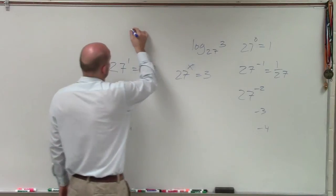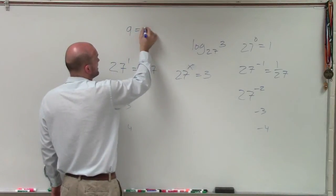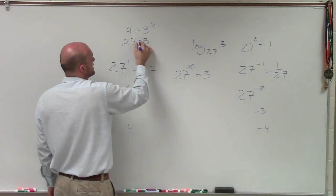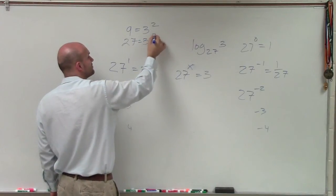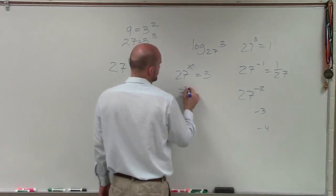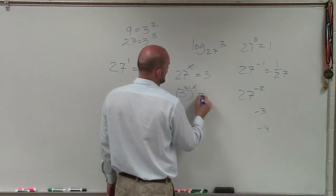Well, we know that we can rewrite 9 as 3 squared. So 27, we can rewrite as 3 raised to the third power. So that's going to be 3 cubed raised to the x equals 3.